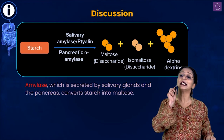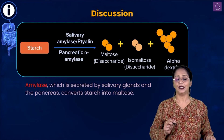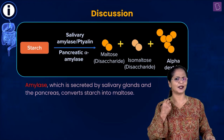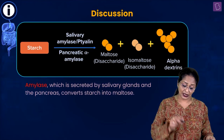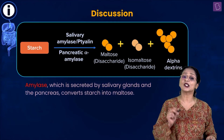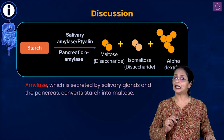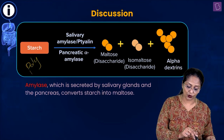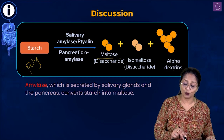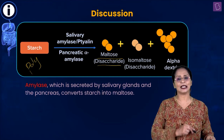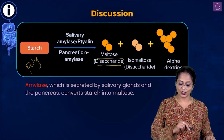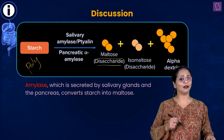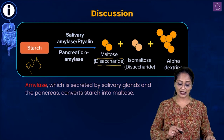Starch gets acted upon by salivary amylase, an enzyme present in the saliva secreted by the salivary glands. Salivary amylase is also called ptyalin — the P is silent. This polysaccharide gets broken down into maltose, which is a disaccharide, and also isomaltose, which is also a disaccharide, and alpha-dextrin.